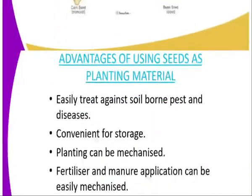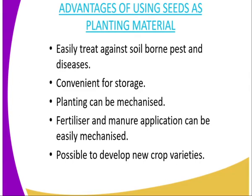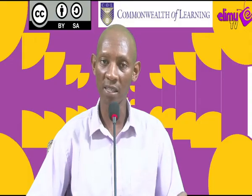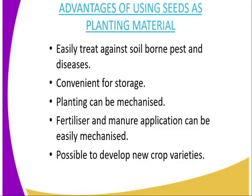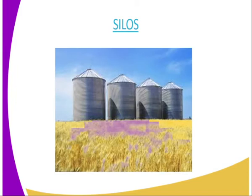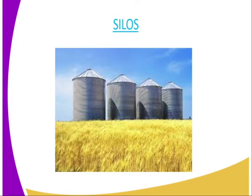Now we go to the advantages of using seed as planting material. The first one is that seeds are easily treated against soil-borne pests and diseases, because they are small in size and therefore mixing them with chemicals becomes very easy. Then number two, it is convenient for the storage of seed, and therefore you can use structures such as silos, as you can see on that diagram, when it comes to storing of the seed upon or after harvesting.